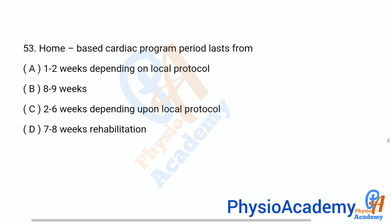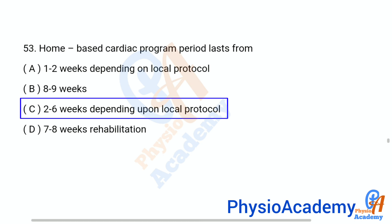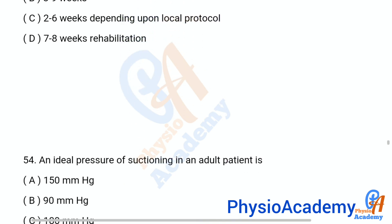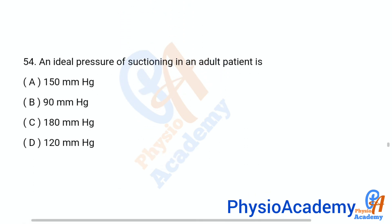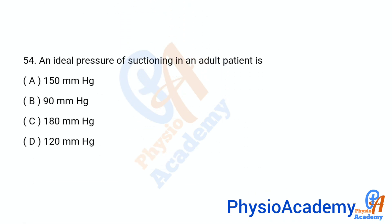Question 53: Home-based cardiac program period lasts for — Option A: one to two weeks depending on local protocol. Option B: eight to nine weeks. Option C: two to six weeks depending upon local protocol. Option D: seven to eight weeks rehabilitation. The correct answer is option C, two to six weeks depending upon local protocol.